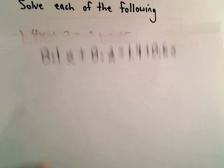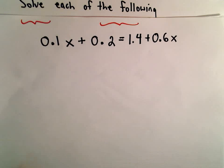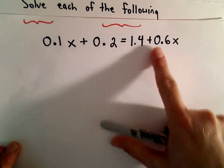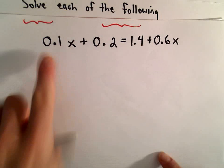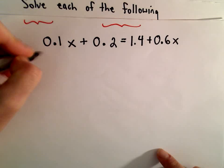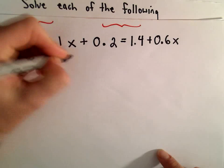So typically, I like to make my variables positive. So I see a 0.6x and a 0.1x. I'm going to subtract the 0.1x from both sides.